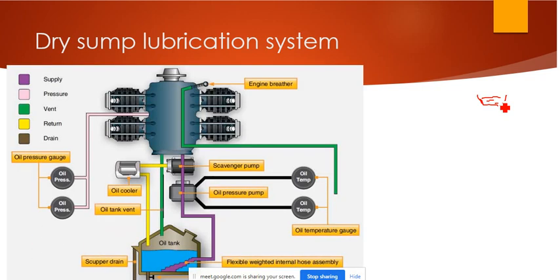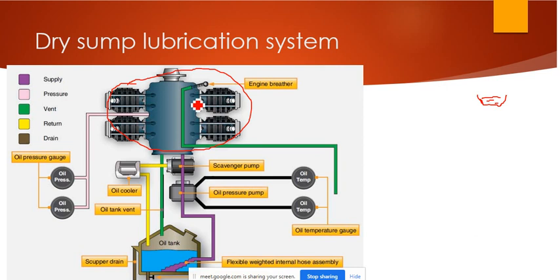Here you can see the image of this dry sump lubrication system — this is the engine part. The main priority of this lubrication system is to cool the engine, because there are a lot of moving parts and because of combustion taking place in the engine the parts will get heated up, and also because of friction they will get heated up.